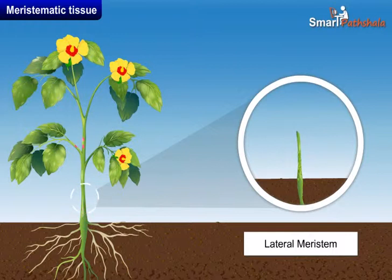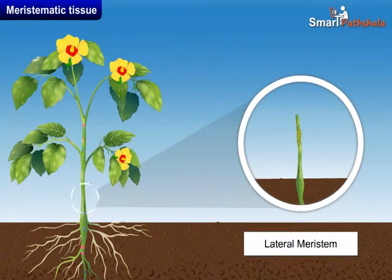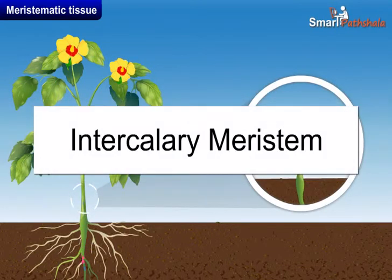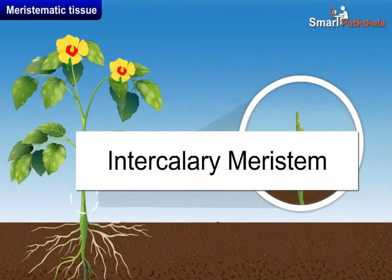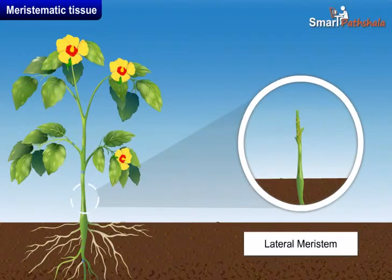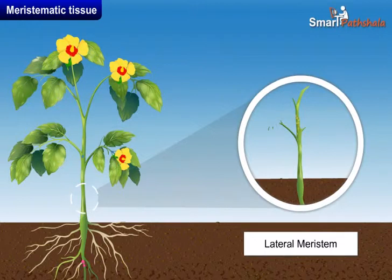B) Lateral meristem: Lateral meristem is present along the sides of the stems and roots. They are responsible for growth in girth, that is, secondary growth. C) Intercalary meristem: Intercalary meristem is present in between the tissues of the plant.